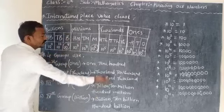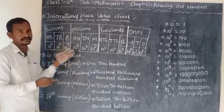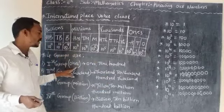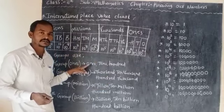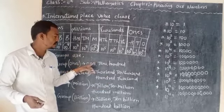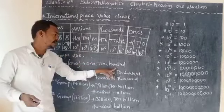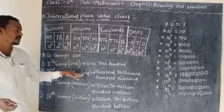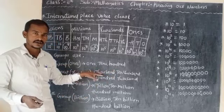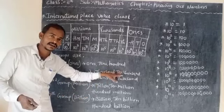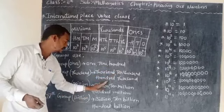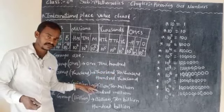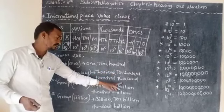The 4 groups of the international chart are: first group ones (ones, tens, hundreds); second group thousands (1000, 10,000, 100,000); third group millions — million means 1,000,000 — then 10,000,000 and 100,000,000. The fourth group is billions.